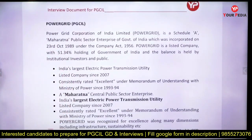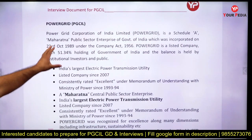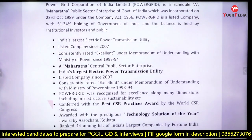Power Grid is a Maharatna company — you should know what Maharatna status means, which is provided in the document. It was incorporated under the Companies Act 1956. Fifty-one percent of the shareholding is with the Government of India, and the rest is with private players or institutional investors and the public. It is the largest electric power transmission utility and is a listed company.